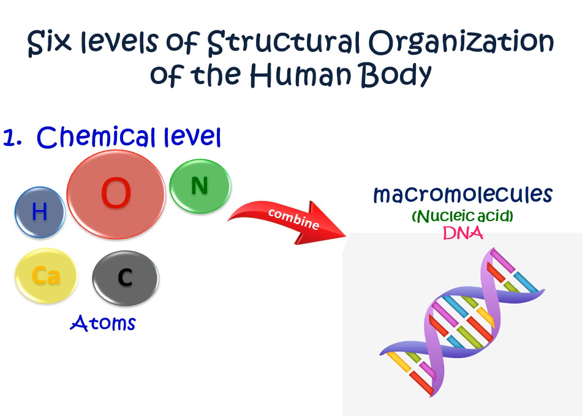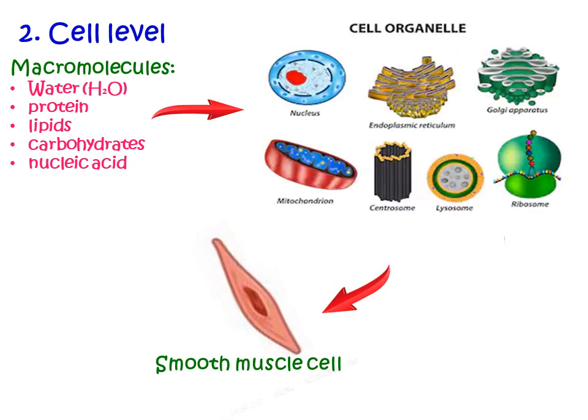Molecules or macromolecules such as nucleic acids — where DNA is formed — represent the chemical level. The second is the cell level of organization, where macromolecules such as water, proteins, lipids, carbohydrates, and nucleic acids present in our body combine together to form cell organelles such as the nucleus, Golgi apparatus, mitochondria, and others, which make up cells like a smooth muscle cell.